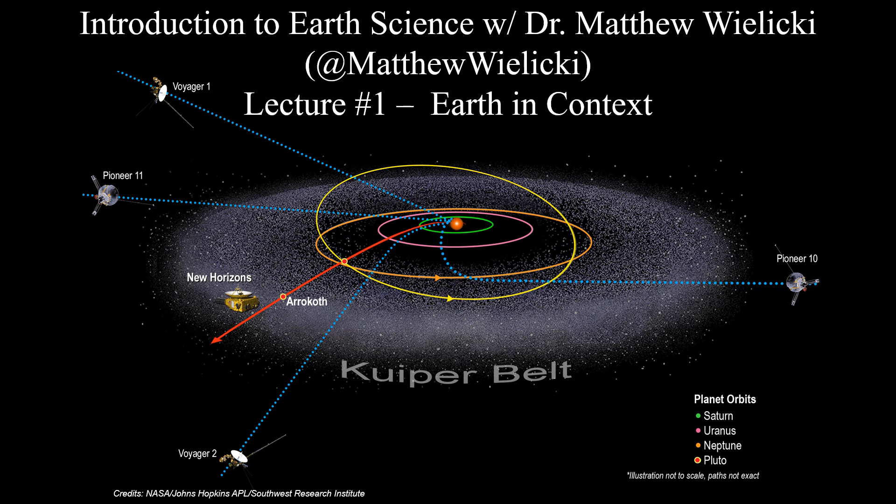A little background about me: I have a bachelor's degree in biochemistry and cellular biology. I also have a PhD in geochemistry from the Department of Earth, Space, and Planetary Sciences at UCLA. I've been an assistant professor in the Department of Geological Sciences at the University of Alabama since 2016. I will be discussing in this lecture series an introduction to earth science, covering topics from the formation of the earth and the solar system and the elements.